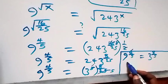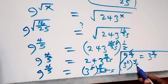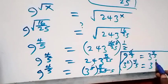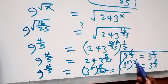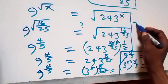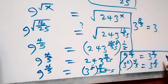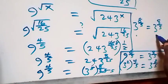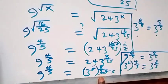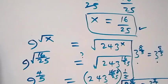On the left side, writing 9 as 3 squared, we have 3 squared raised to power 4 over 5. The powers multiply: 2 times 4 over 5 equals 8 over 5, giving 3 raised to power 8 over 5. This equals 3 raised to power 8 over 5 on the right side. Left hand side equals right hand side, so x equals 16 over 25 also satisfies the given problem.